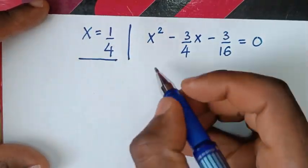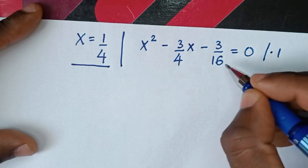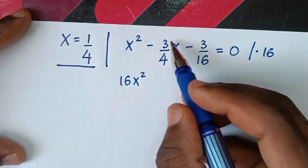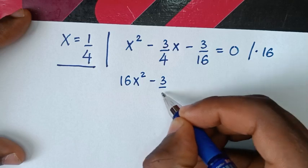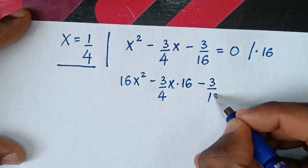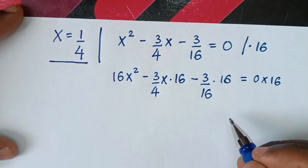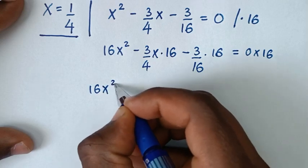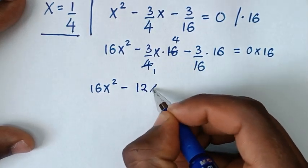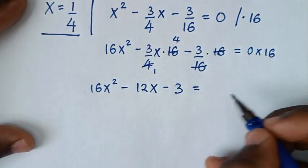Then in the next step, we remove the denominators by multiplying the whole equation by 16. So x squared times 16 gives 16x squared. Negative 3 over 4 x times 16, simplifying by 4, gives negative 12x. Then minus 3 over 16 times 16 — the 16s cancel — gives minus 3, equal to 0.